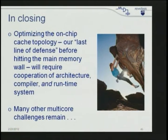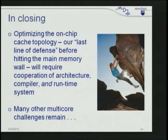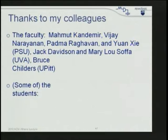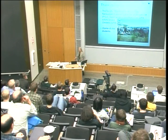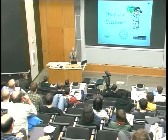In closing, optimizing on-chip cache topology — our last line of defense before hitting the memory wall — requires the cooperation of architecture, the compiler, and the runtime system. There are many other multicore challenges. I want to thank my colleagues and the students in the MDL group who worked on this project, and I'll be happy to take questions.